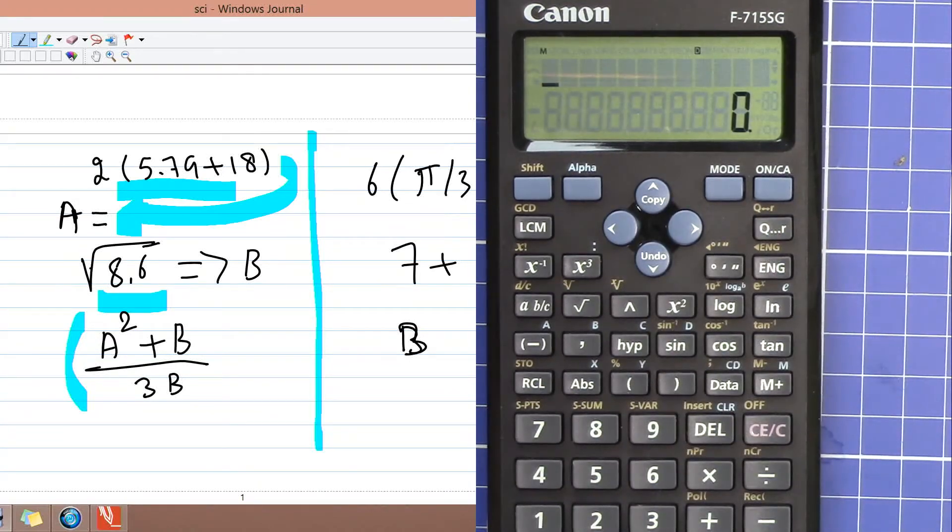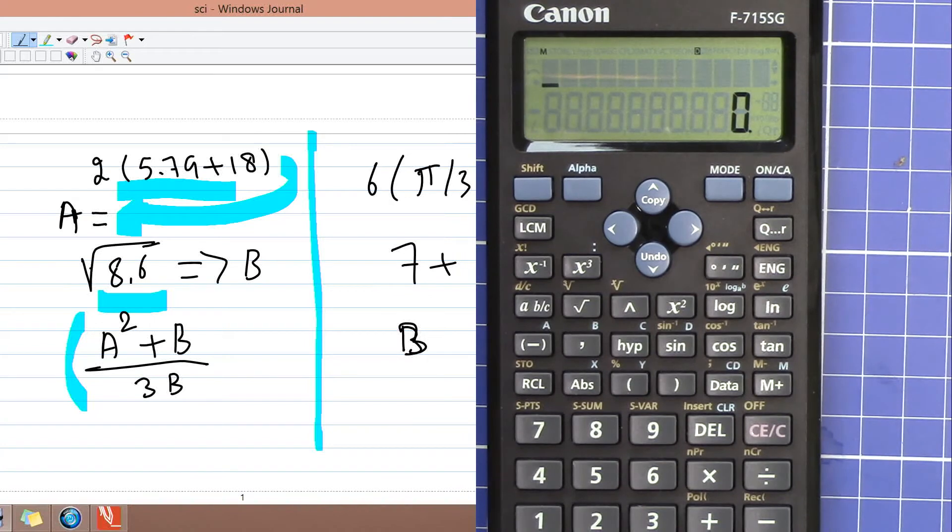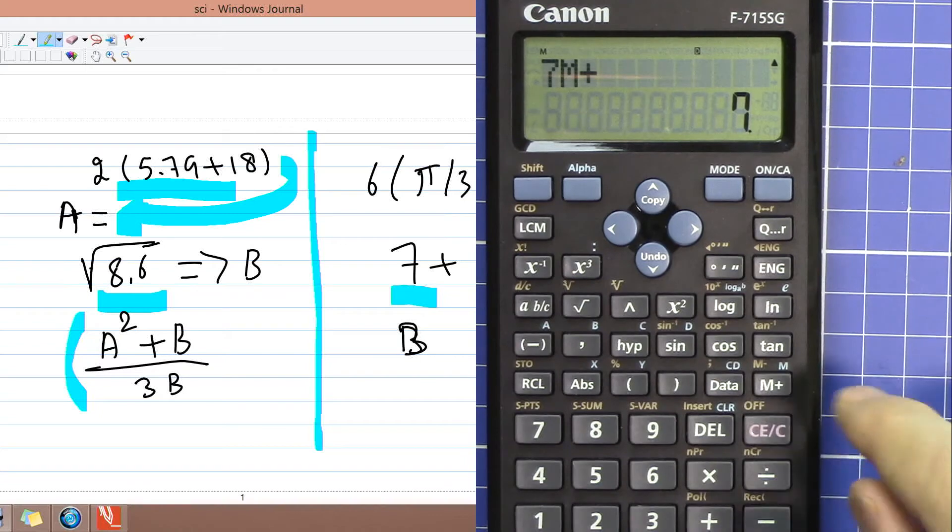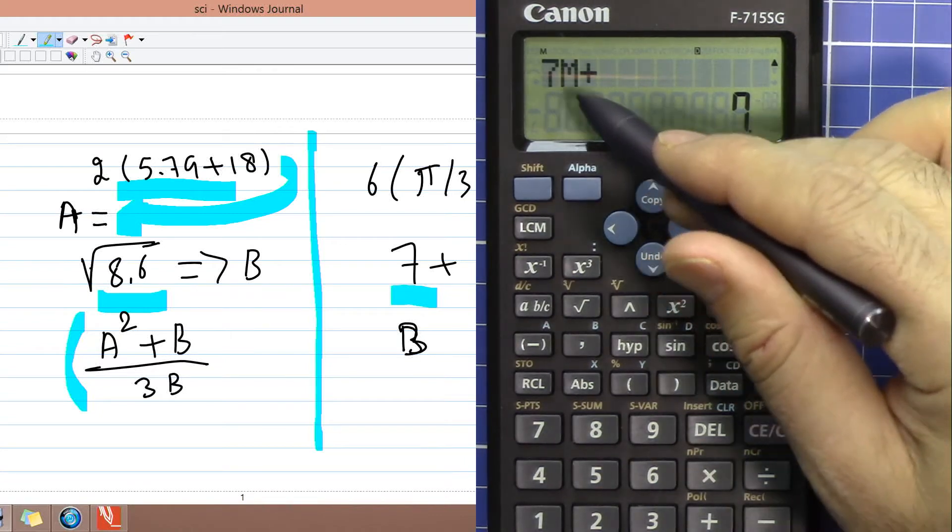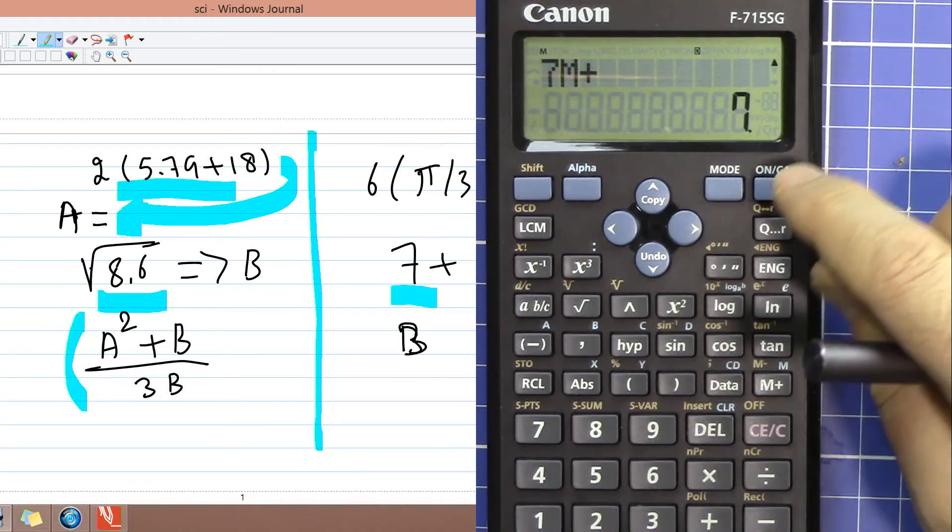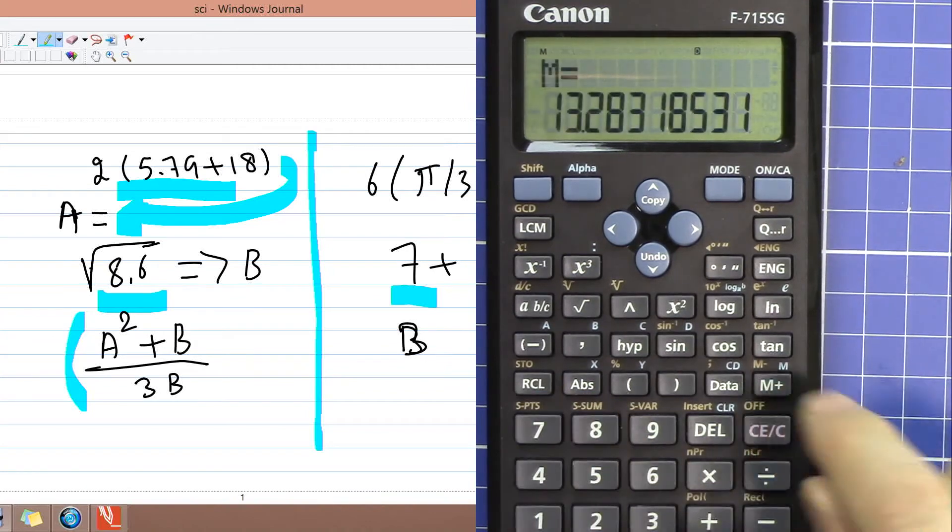But now let's say you want to add the 7 to the value. Just press 7 and then plus M. Now this doesn't replace it, it just added to that value. So let's recall it. Now you see the value is 13.2 something.